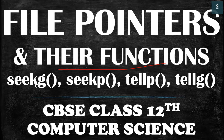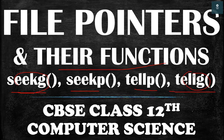We have four functions: the first one is seekg, then we have seekp, tellp, and tellg. seekg and tellg are for the get pointer, that is for input mode, and seekp and tellp are for the output mode, that is the put pointer.